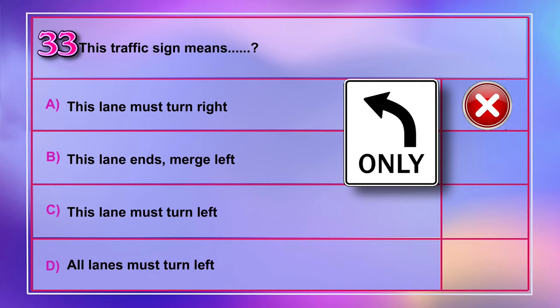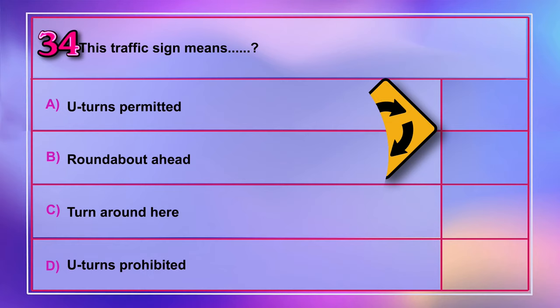Question number 34: This traffic sign means A) U-turns permitted, B) roundabout ahead, C) turn around here, D) U-turns prohibited. Correct answer is B: roundabout ahead.